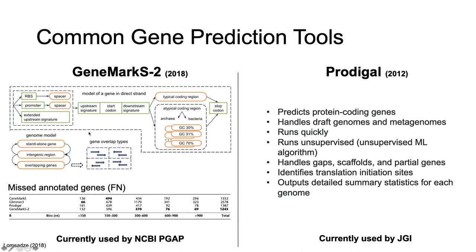GeneMarkS2 is a very new tool, released in 2018. One of the tables from their paper shows the number of misannotated genes — false negatives, proteins that should be there but aren't. Comparing the classic GeneMarkS, Glimmer3, and Prodigal, GeneMarkS2 had better recall of true proteins past about 300 base pairs in length. There are many factors involved, but GeneMarkS2 is worth being aware of as an option, though I'll be demoing Prodigal in the tutorial.